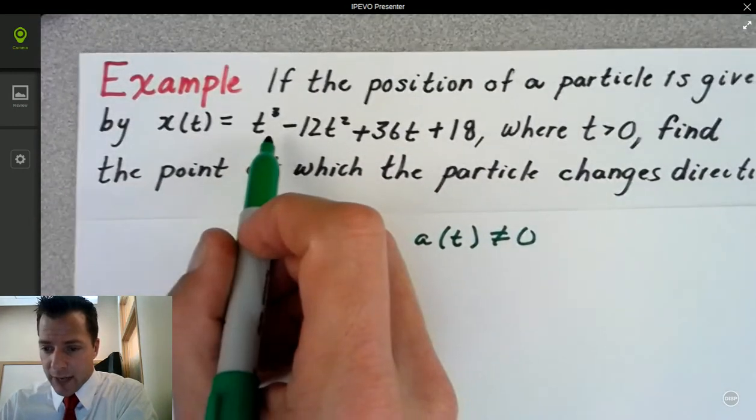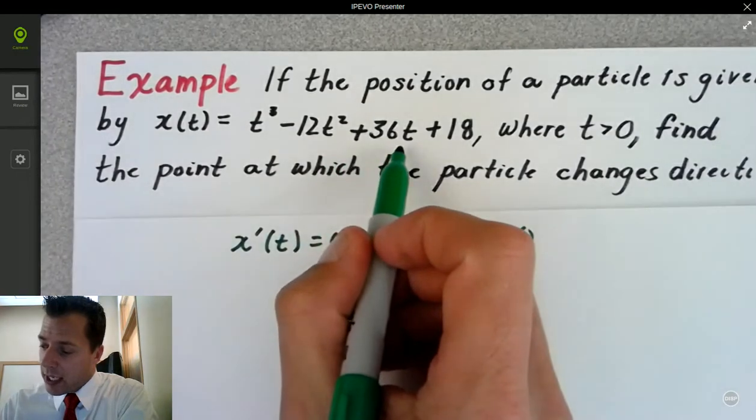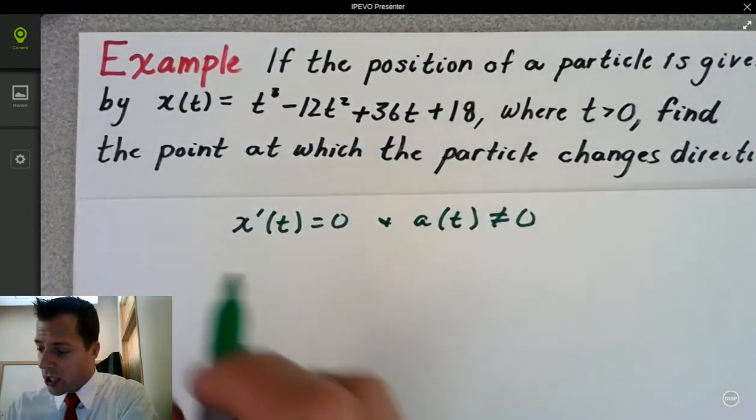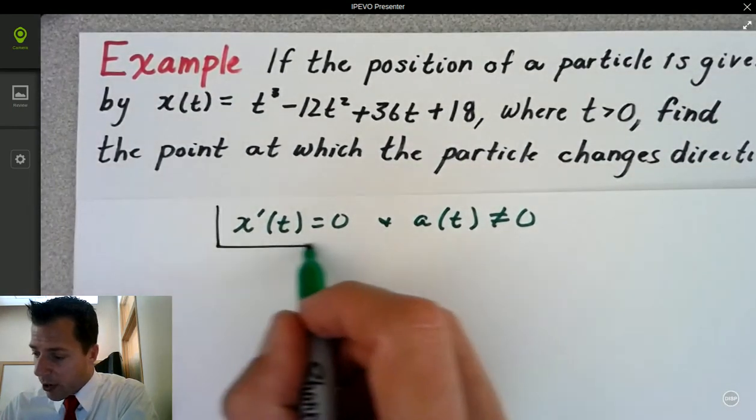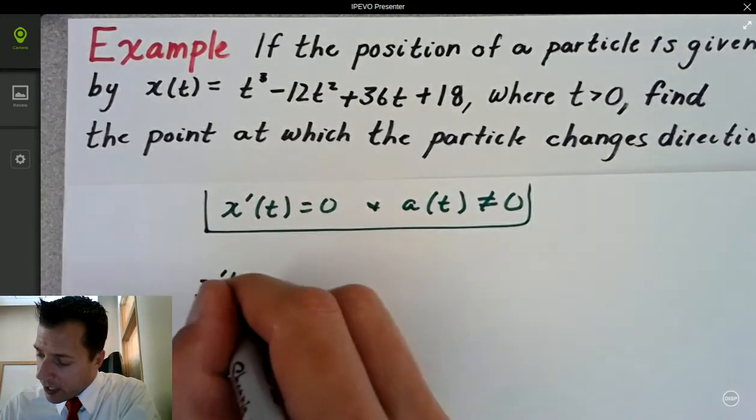First we need the first derivative. Our position function is given by t cubed minus 12t squared plus 36t plus 18, where t is greater than 0, and we want to know when this particle changes direction. So let's find x prime of t.